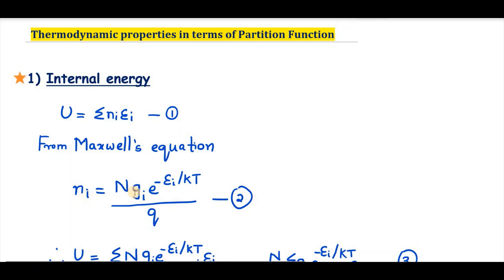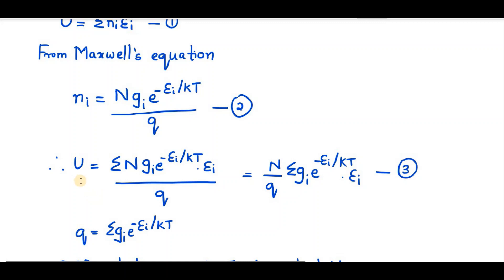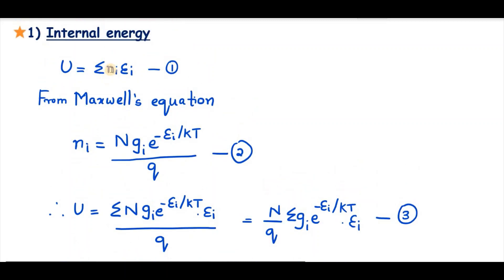Where gᵢ is the degeneracy of the energy levels and q is the partition function. Therefore, in equation 1, instead of nᵢ we substitute equation 2. We get U equals summation N·gᵢ·e raised to minus εᵢ by kT, into εᵢ, divided by q. Since N and q are constants, we can write this as N by q, summation gᵢ·e raised to minus εᵢ by kT, into εᵢ. Let that be equation 3.